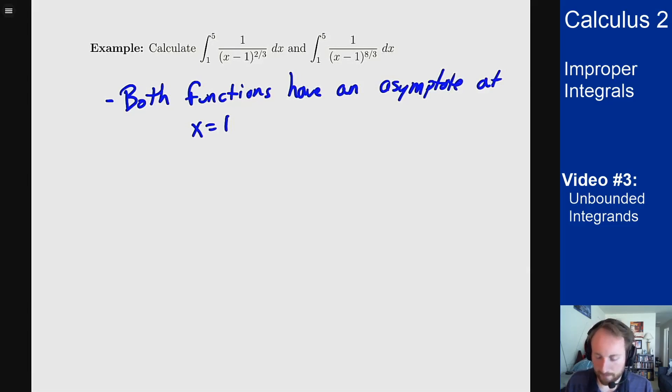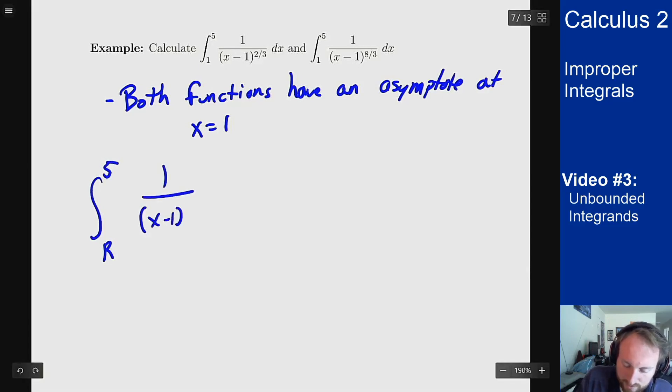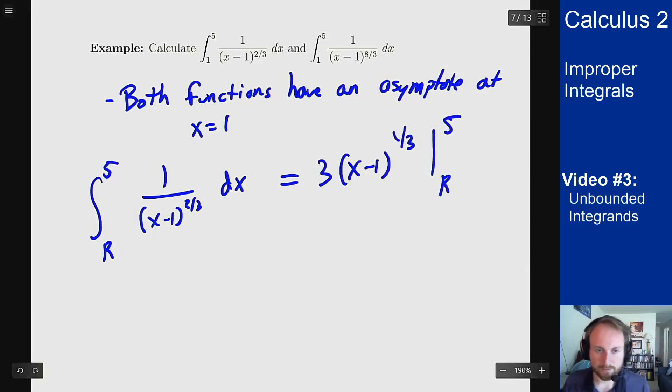So what I should do is replace the ones by r's, do the integral, and then limit to 1 to see what I get. For the first case we have the integral from r up to 5, I'm replacing the 1 by an r, of 1/(x-1)^(2/3) dx. This evaluates to 3(x-1)^(1/3) from r up to 5. Then I plug in my endpoints: 3·4^(1/3) minus 3(r-1)^(1/3).